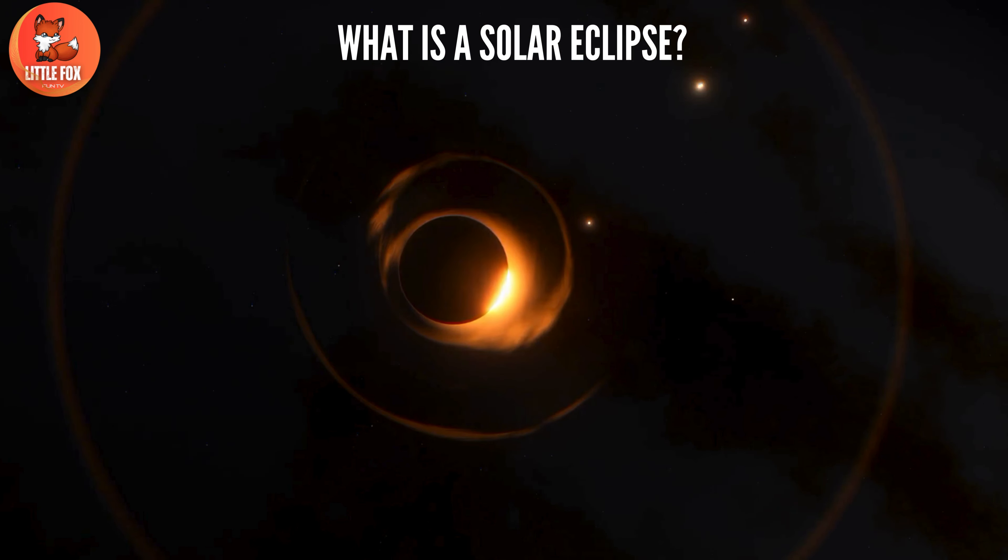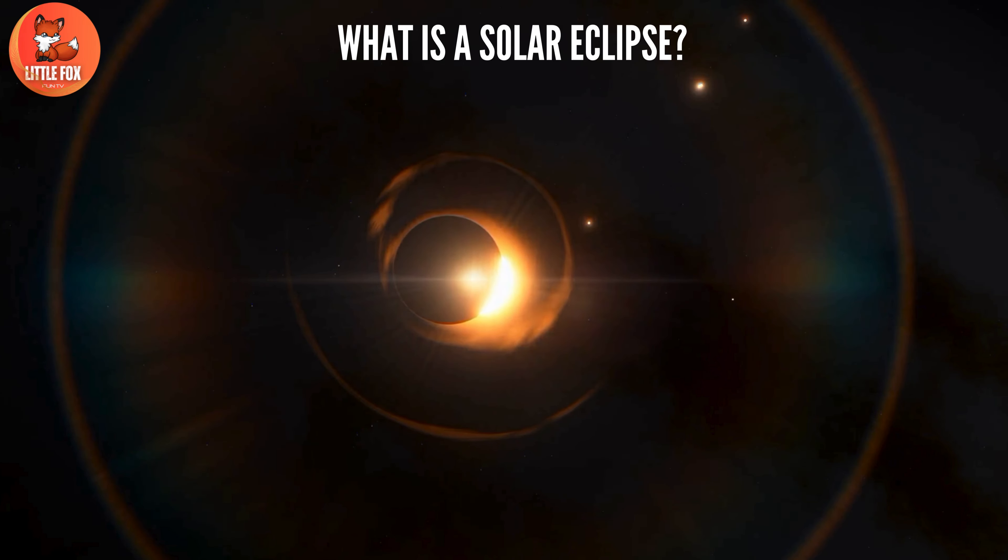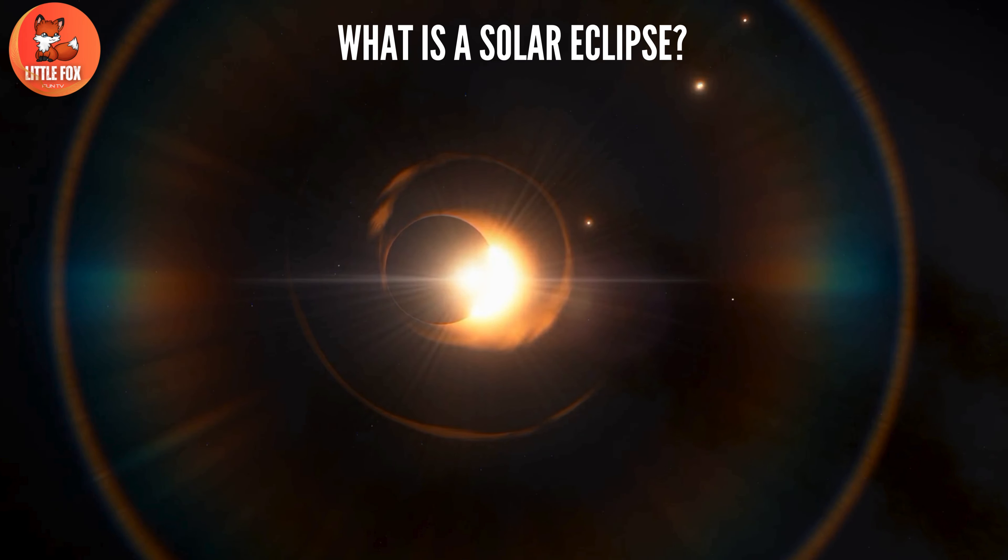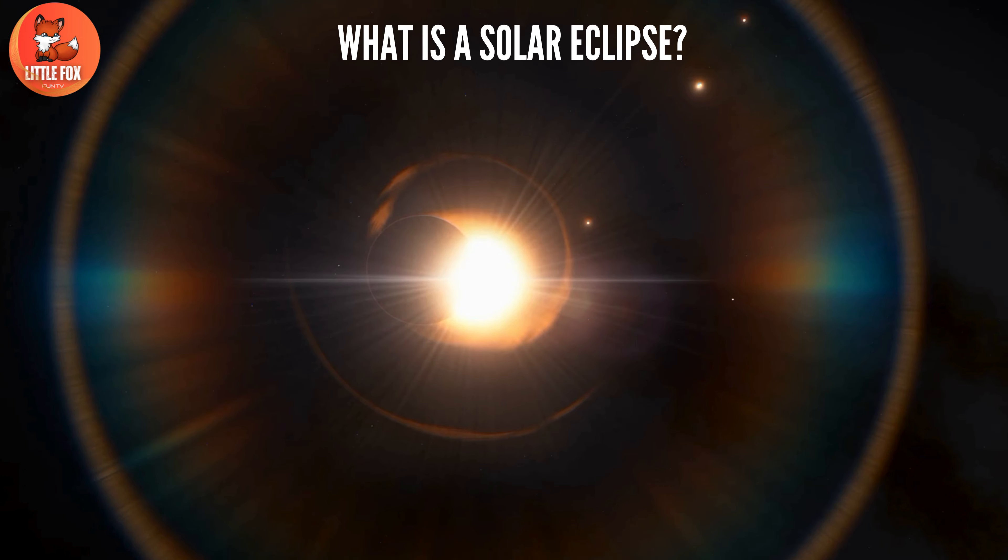As the moon throws its shade, it leaves a trail of darkness behind as earth does its graceful spin. We call this shadowy path the path of totality. It's like Mother Nature's own catwalk.